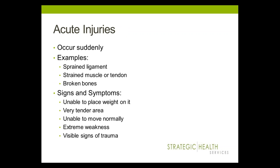Acute injuries usually occur suddenly when playing or exercising. Some examples are sprained ankles, strained backs, fractured hands. Signs and symptoms of acute injuries include sudden severe pain, swelling, not being able to place weight on a leg, knee, ankle, foot, arm, elbow, wrist, hand, or finger that is very tender, not being able to move a joint as you normally would, extreme leg or arm weakness, or a bone or joint that is visibly out of place.